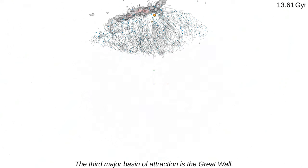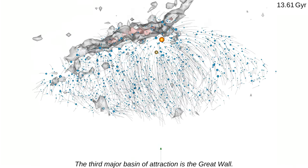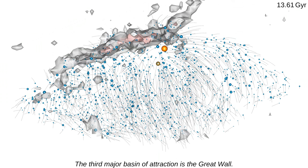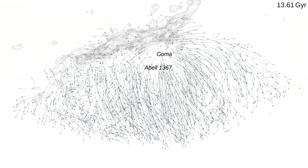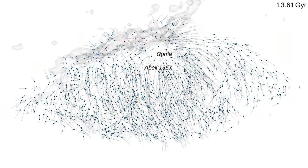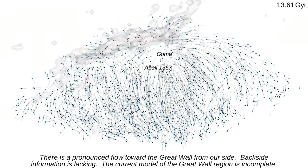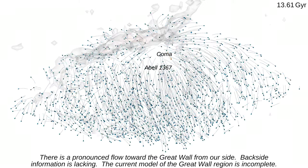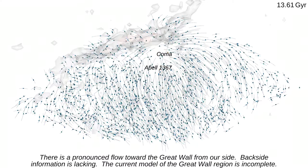The third major basin of attraction is the Great Wall. There is a pronounced flow toward the Great Wall from our side, backside information is lacking. The current model of the Great Wall region is incomplete.